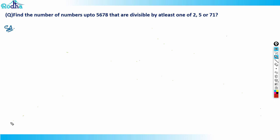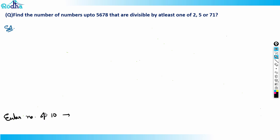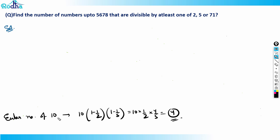We've discussed earlier what Euler numbers are. For example, to calculate the Euler number of 10, you eliminate all multiples of 2 and all multiples of 5. So it's 10 × (1/2) × (4/5) = 4. The Euler number of 10 is 4.